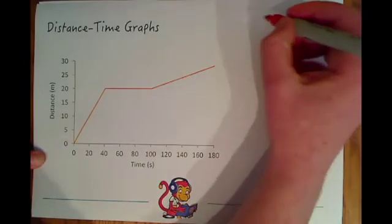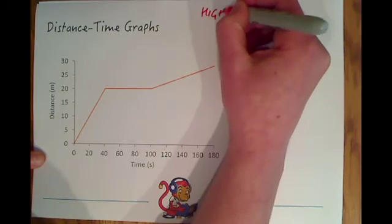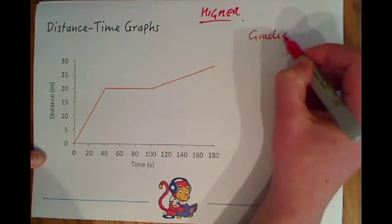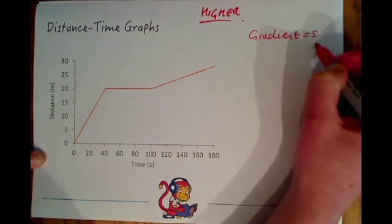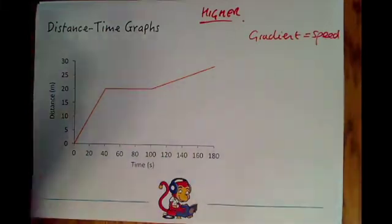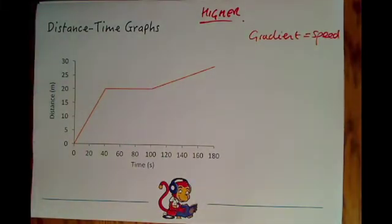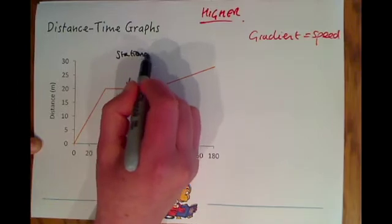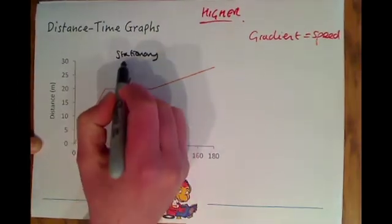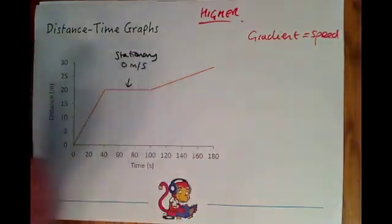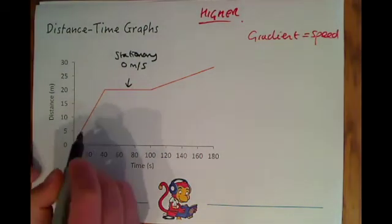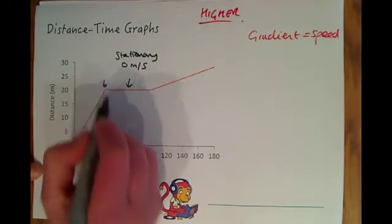Okay so for higher tier, we said before the gradient tells you the speed that the object is travelling at and basically for higher you need to be able to calculate that gradient. If you remember at this point here the object is stationary, so you know by definition that its speed would be 0 meters per second because it's not moving. But let's have a look at concentrating on calculating the speed between a and b here and c and d here.